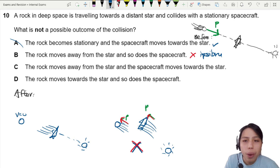C, the rock moves away from the star and the spacecraft moves towards the star. Oh so they collide, boom, then they move apart, possible. Let's draw this out again.